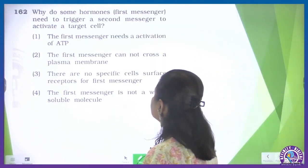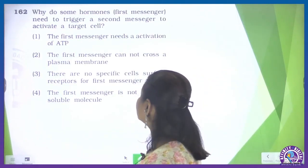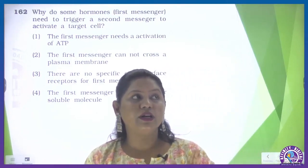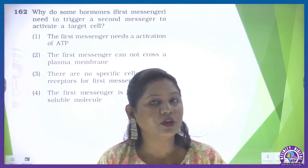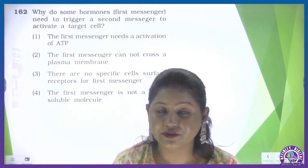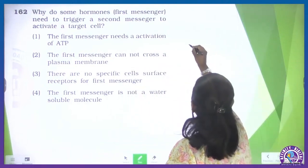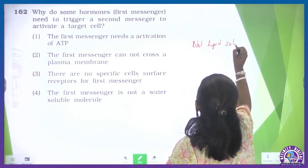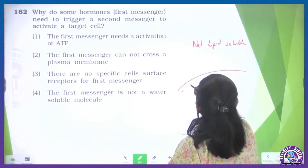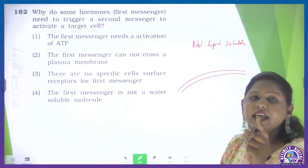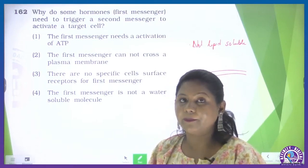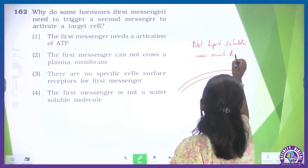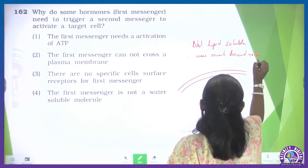Question: why do some hormones, that is the first messengers, need to trigger a second messenger to activate a target cell? Some hormones belonging to class 1 — that is protein hormones, peptide hormones — and class 4, that is amino acid derivative hormones, are not lipid soluble. Because they are not lipid soluble, they cannot directly enter the plasma membrane. Since they are water soluble, they use membrane-bound receptors.